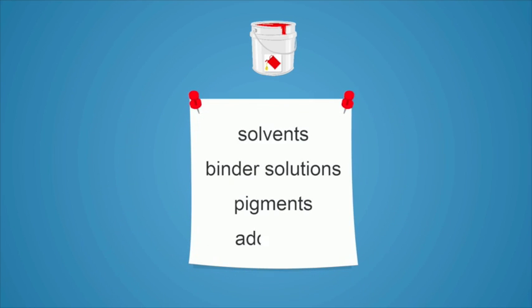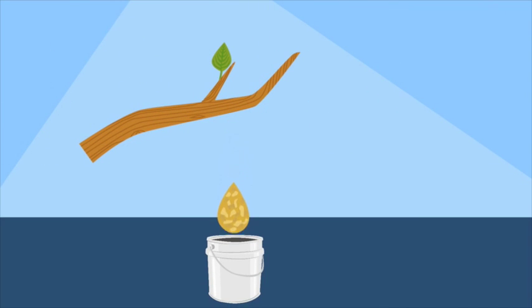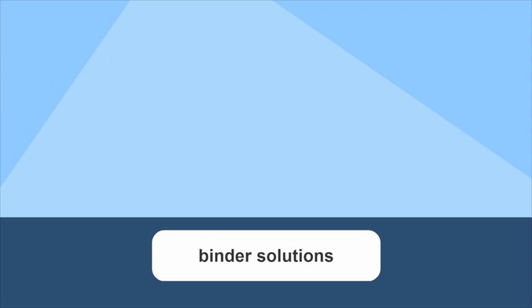The printing inks consist of various components that are individually blended. To begin with, the raw materials, such as resin, are dissolved for the binder. This produces binder solutions.